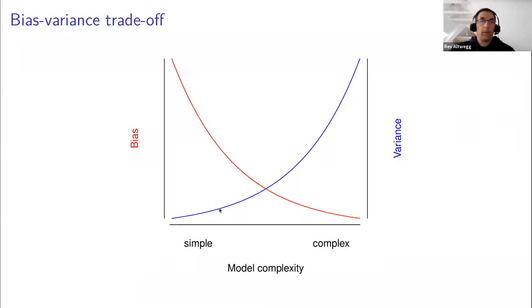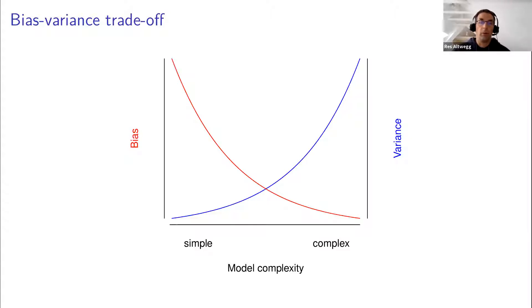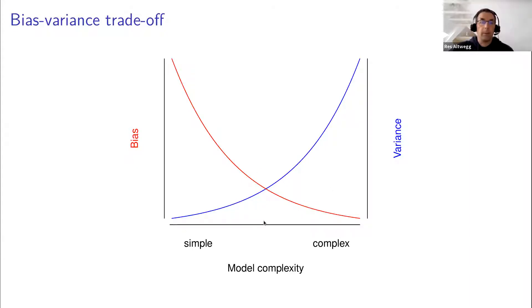There is a trade-off between bias and variance in relation to model complexity. A very simple model gives very precise parameter estimates because we have a lot of data per parameter, but it tends to be biased if it doesn't capture the structure well. As we increase model complexity, bias decreases because the model can fit more complex structures, but variance also increases. A model with as many parameters as data points fits perfectly but loses all predictive ability. We want to select the model that balances this bias-variance trade-off at intermediate complexity.